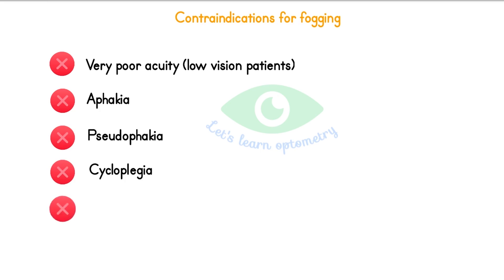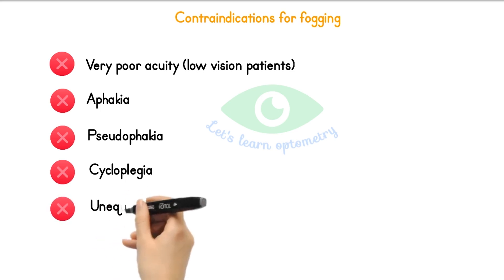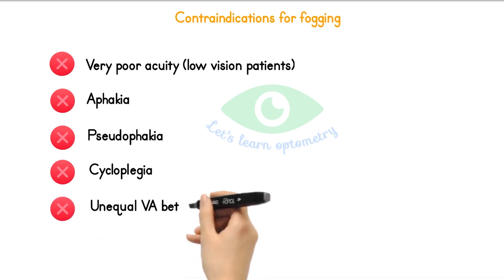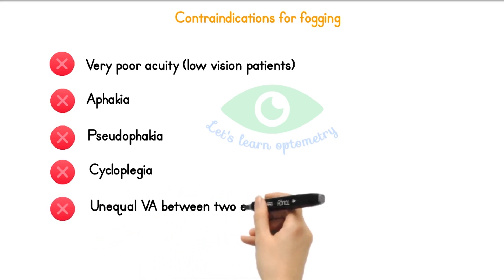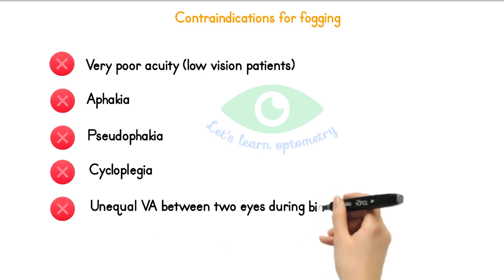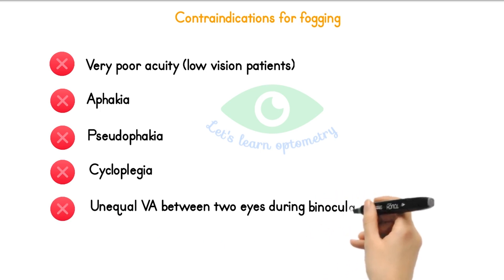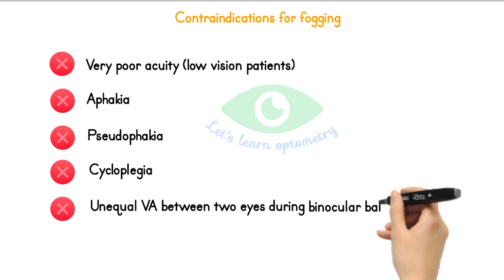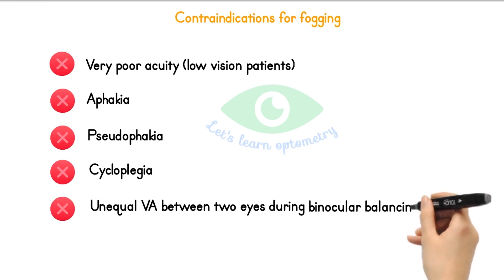During binocular balancing test, if the acuity is different for both eyes, we don't do the test itself. The prerequisite for binocular balancing test is to have equal acuity between the two eyes.